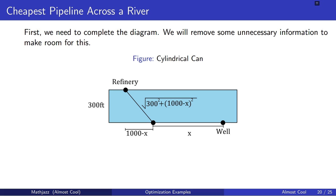And the distance across the river becomes the square root of 300 squared plus the square of 1,000 minus x. That's just using the Pythagorean theorem on this triangle that has one leg is 1,000 minus x and the other leg is 300 feet.